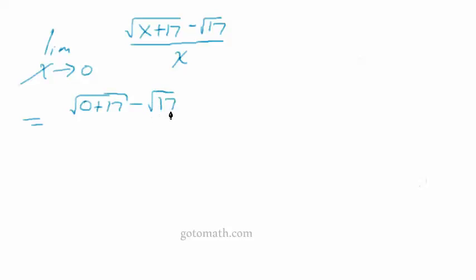Rewriting the problem. Okay, so the first thing we do is direct substitution, plugging 0 in. And we end up with, I think everybody can see this real fast, we end up with 0 over 0. So that means we need to do something.